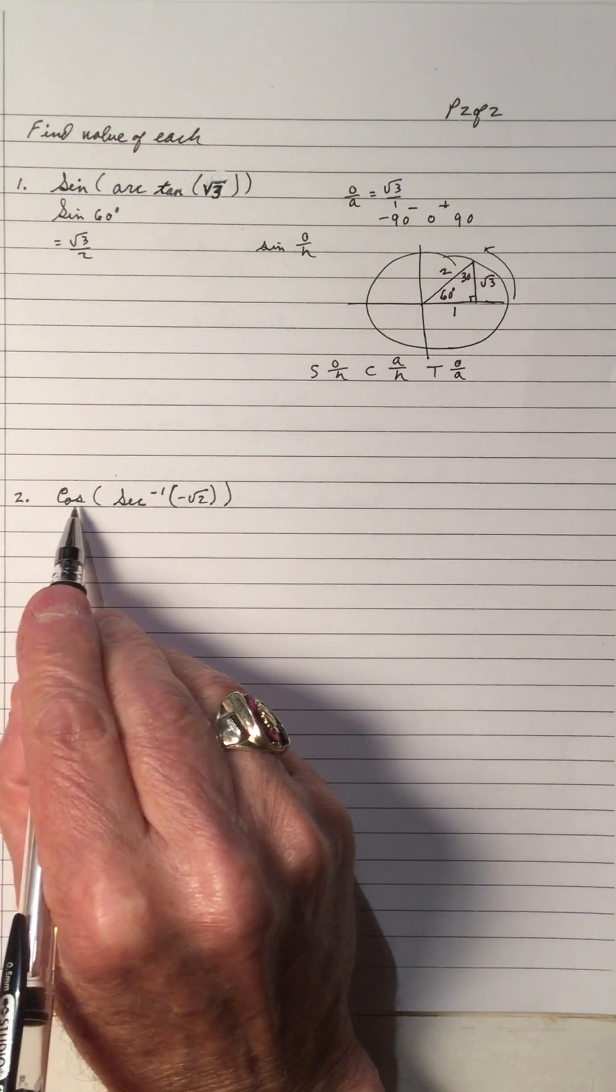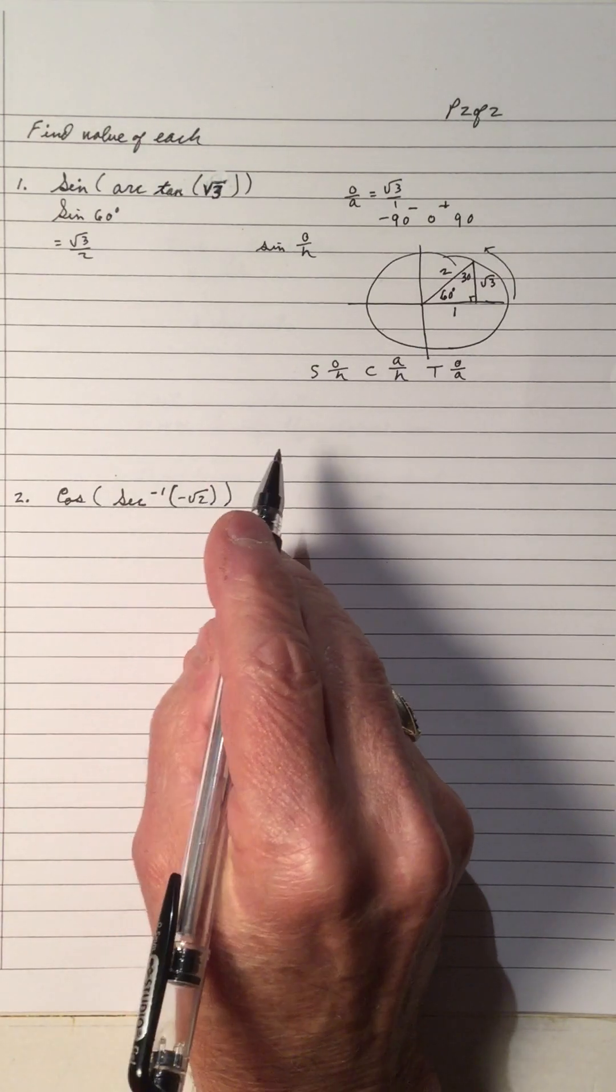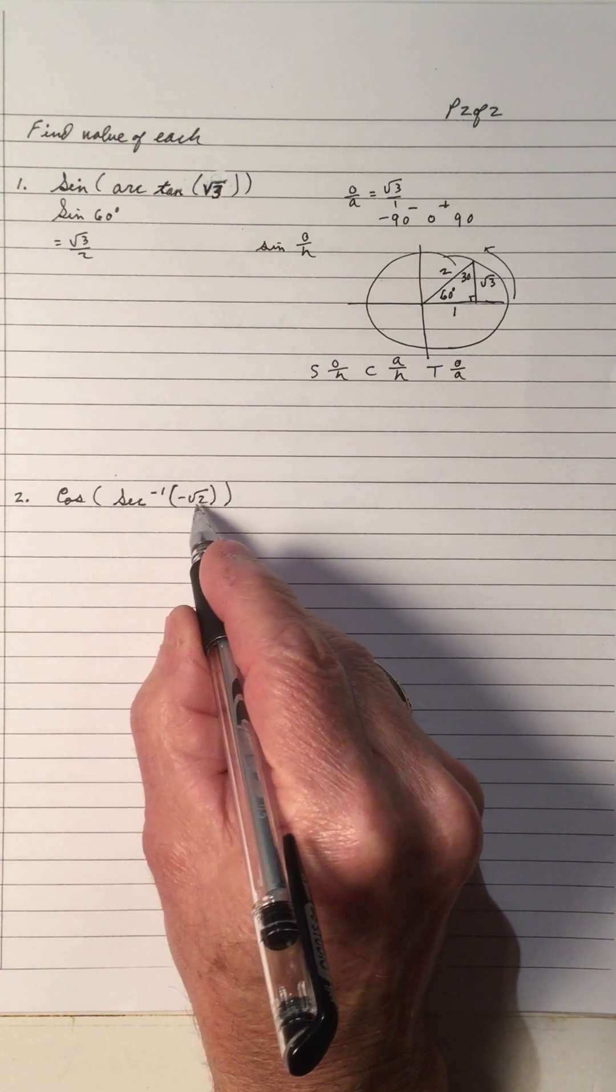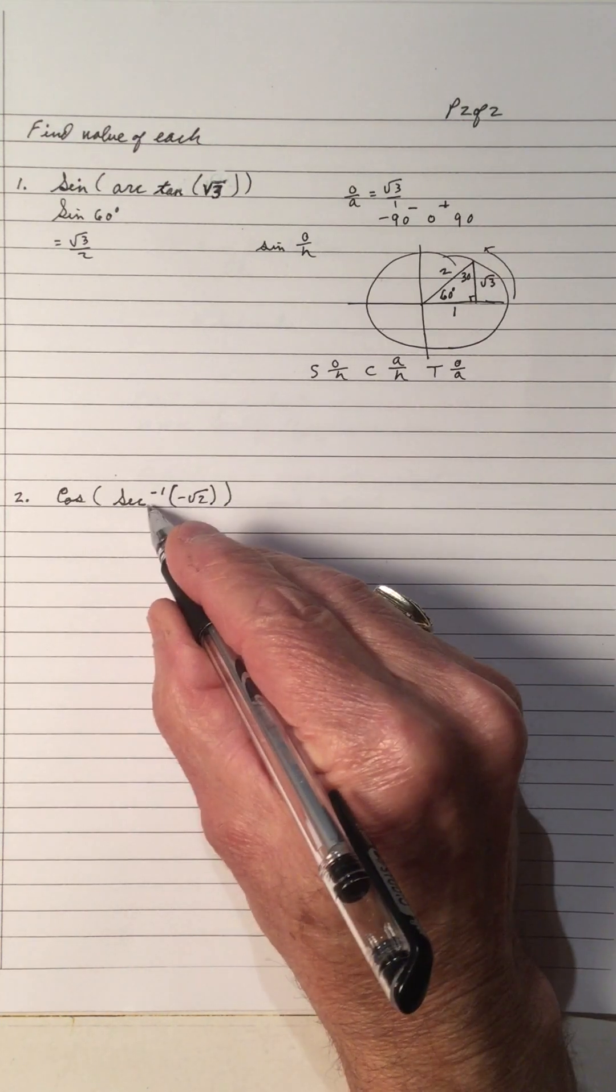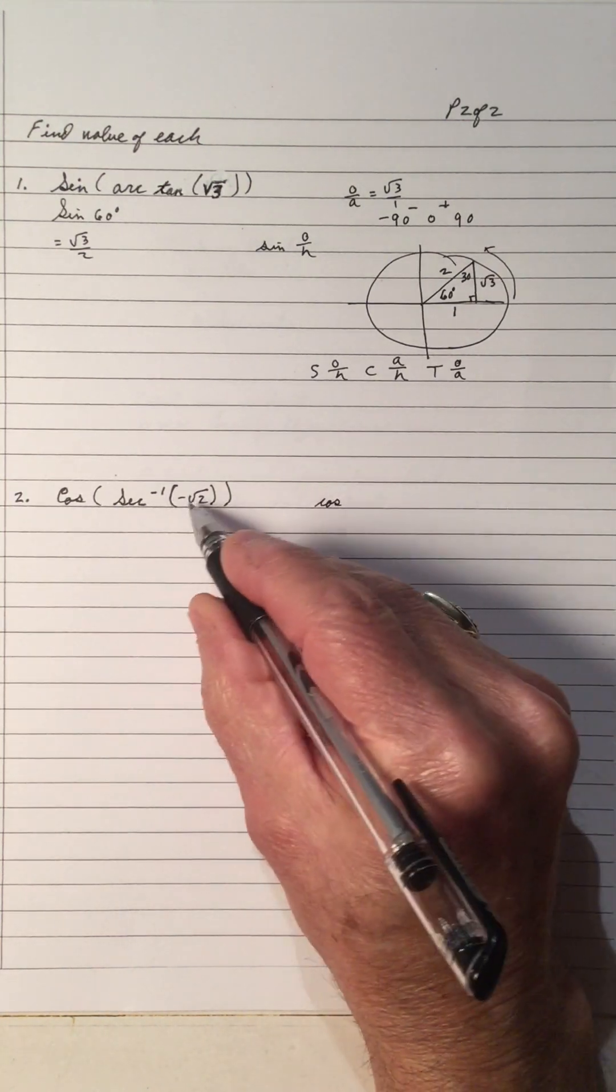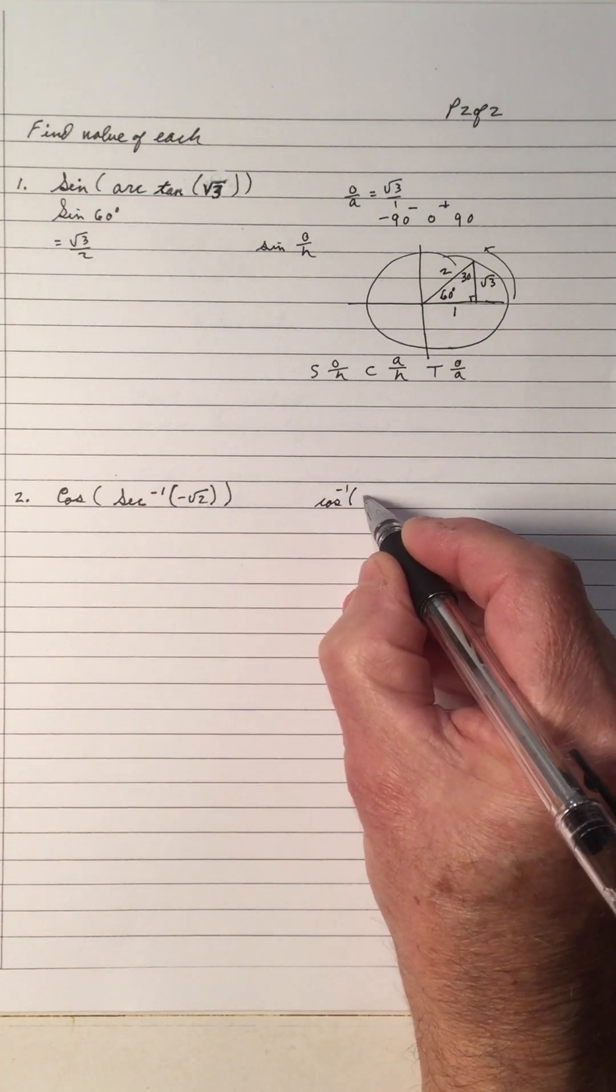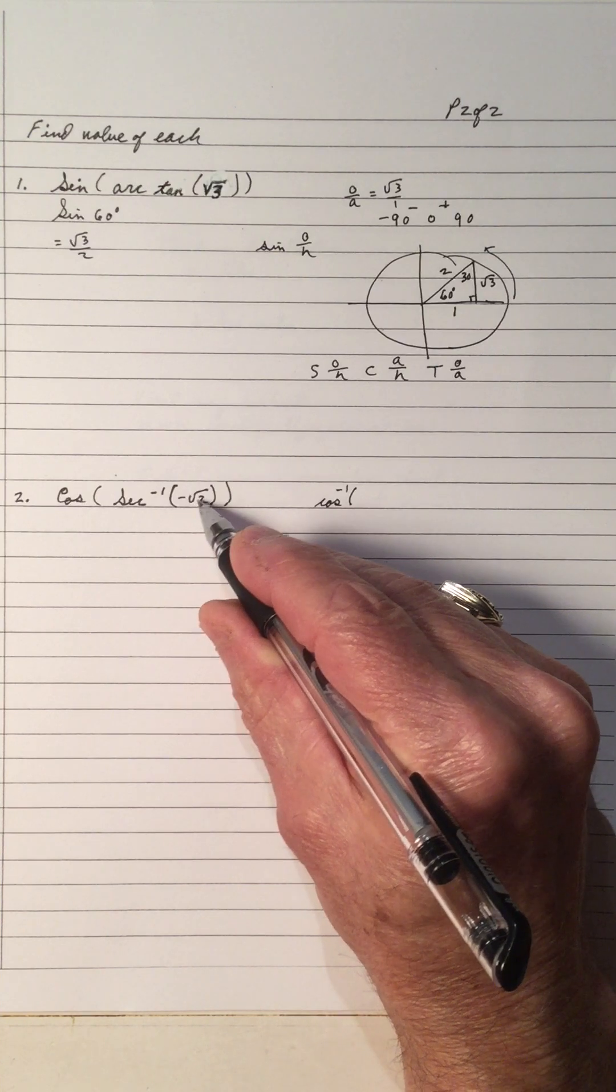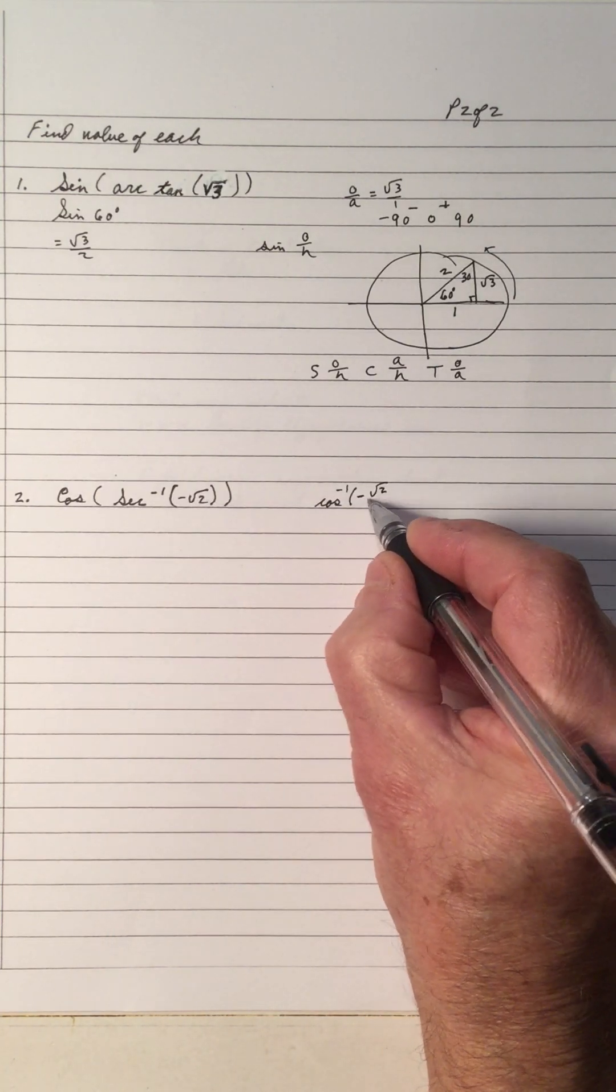Now, let's look at cos secant negative 1 of a negative root 2. Or sorry, negative root 2, I don't know where I got negative root 2 over 2. So, we got secant, so we should have cos. And the reciprocal here is, this is root 2 over 2. So, the reciprocal is going to be negative root 2 over 2.